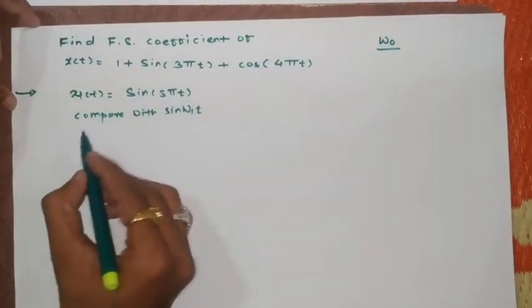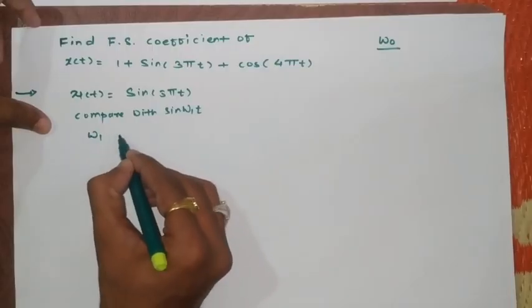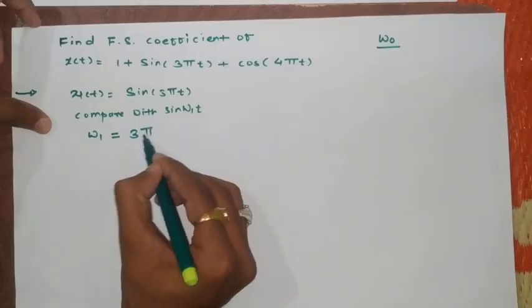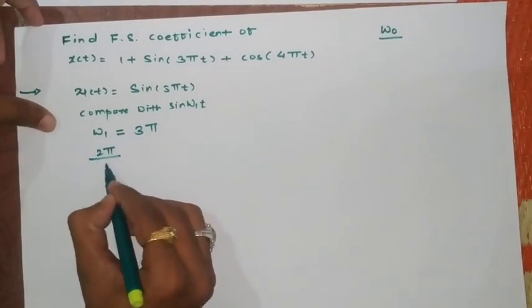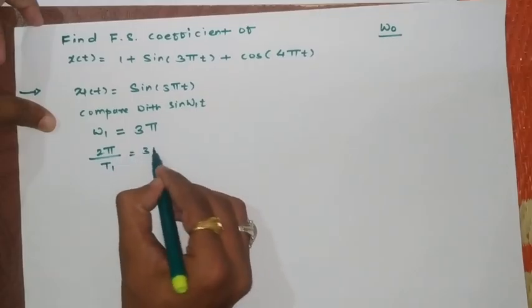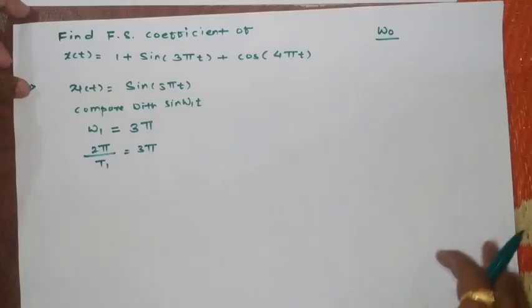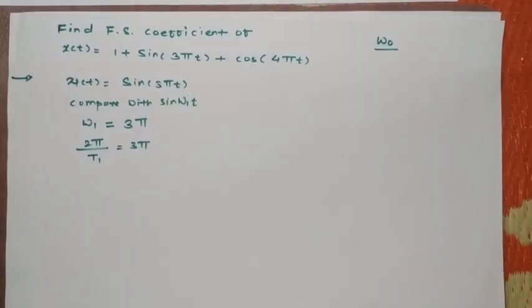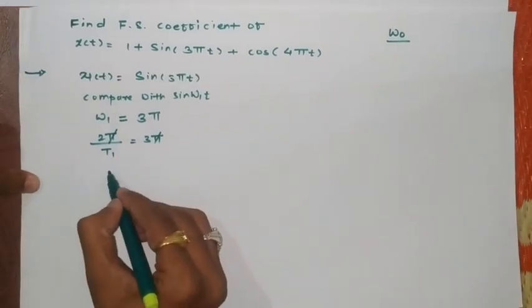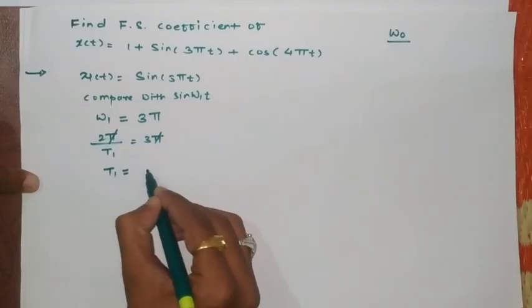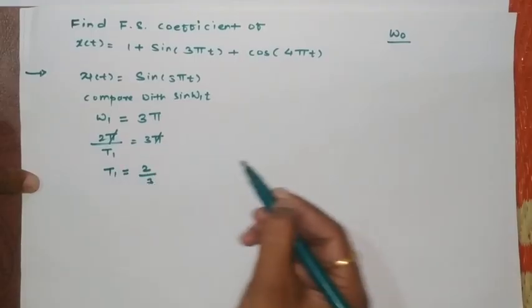Now when we compare this term I can get ω1 = 2π/T1 equals 3π. From that we can find its time period as 2π/T1 equals 3π. So here this term will get cancelled. We will get the first period as T1 equals 2 upon 3.